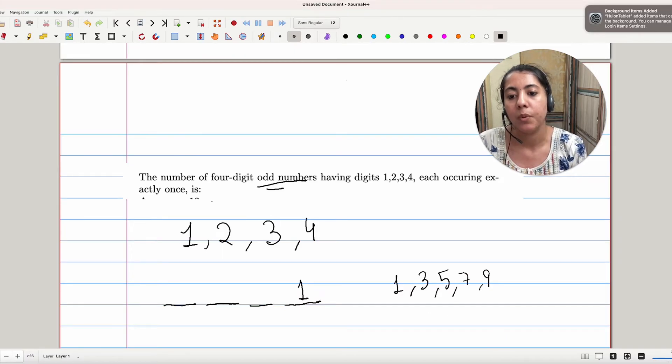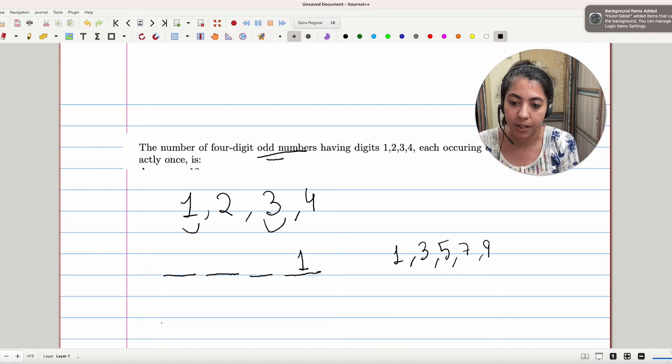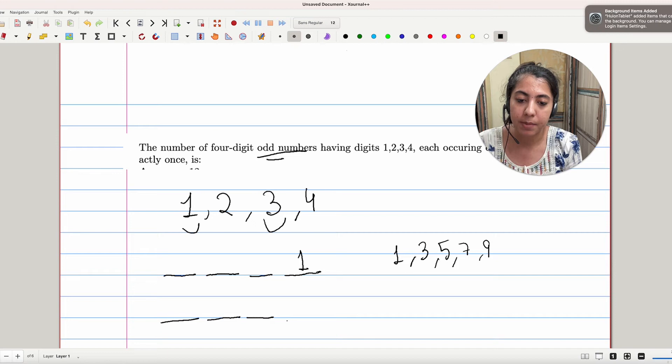Since here we have 1 and 3 available, we can form odd numbers using 1 and 3. The only two possibilities for the ones place will be 1 and 3, and the rest of the remaining digits can be permuted in 3 factorial ways, as we have 3 blank spaces and 3 digits to put in those positions.